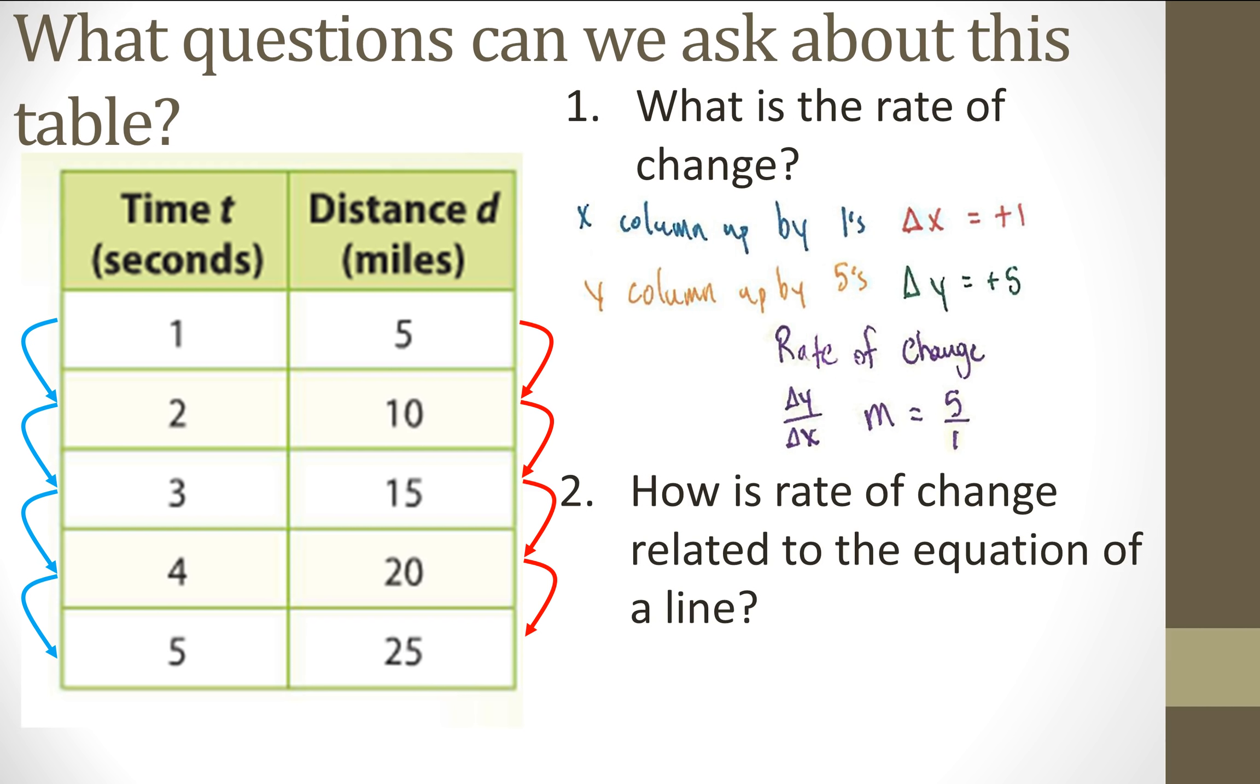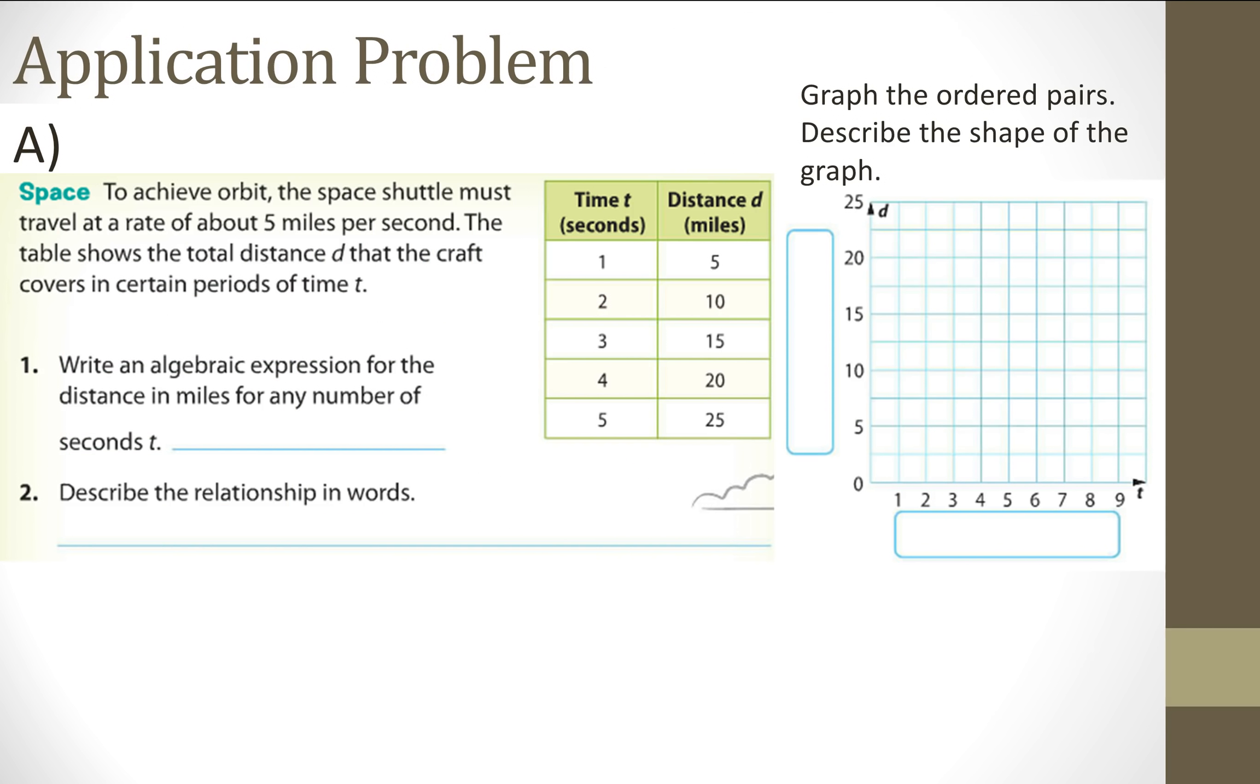Deeper question. How is rate of change related to the equation of a line? So I gave you a hint by saying M is equal to five over one or M is equal to five. If you said the rate of change is the slope of a line, then you are absolutely correct. Rate of change is the slope of a line. Let's keep on moving forward.